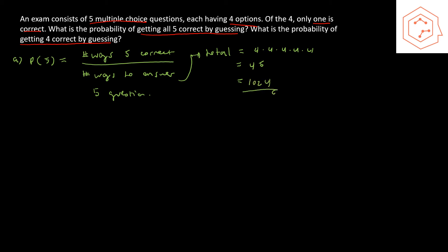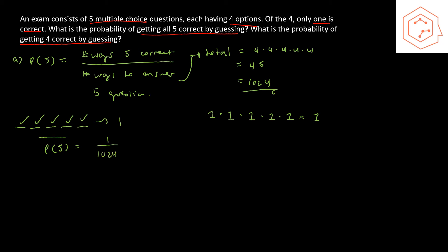The number of ways to get all five questions correct: since each question has only one correct answer, there's only one option per question — one times one times one times one times one — so just one possible way. Therefore, P(5 correct) = 1/1024. That's the chance of getting all five questions correct purely by guessing.